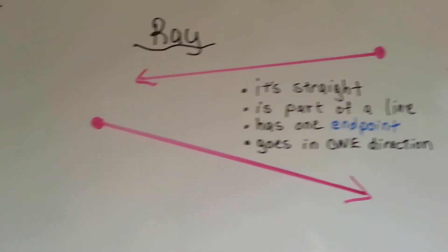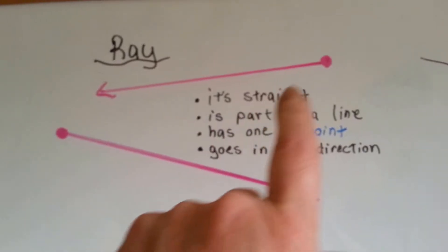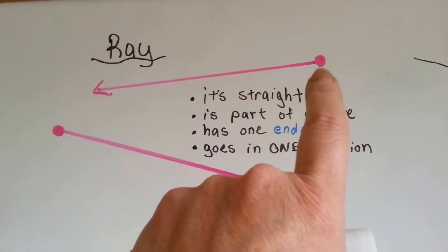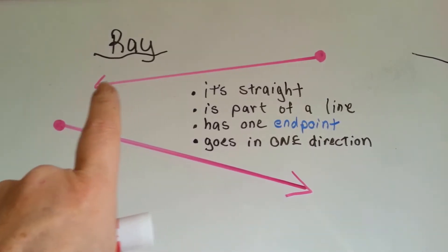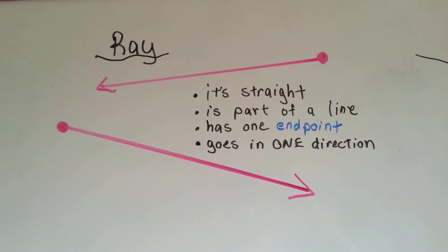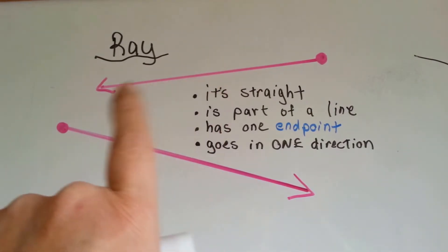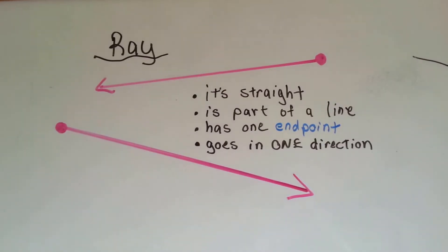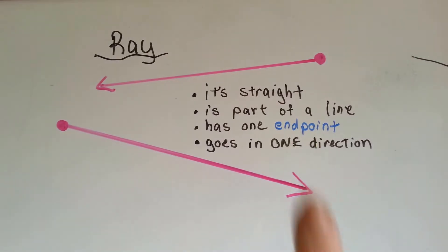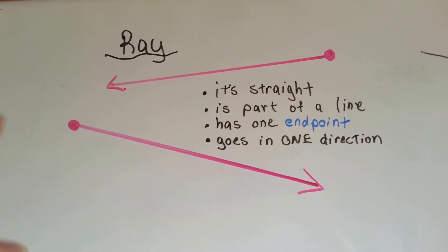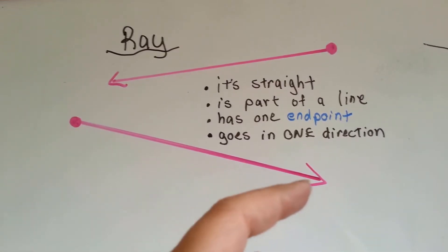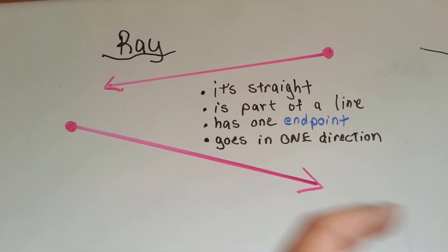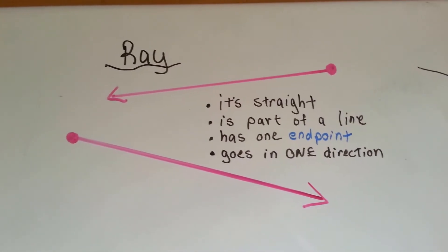A ray is a line that has one end point and an arrow on the other side that continues on and on. It's straight. It's part of a line. It has one end point and it goes in one direction. It doesn't matter what direction it is — as long as it's straight, it has an end point and an arrow tip on the other side showing it's going in that direction. It is called a ray.